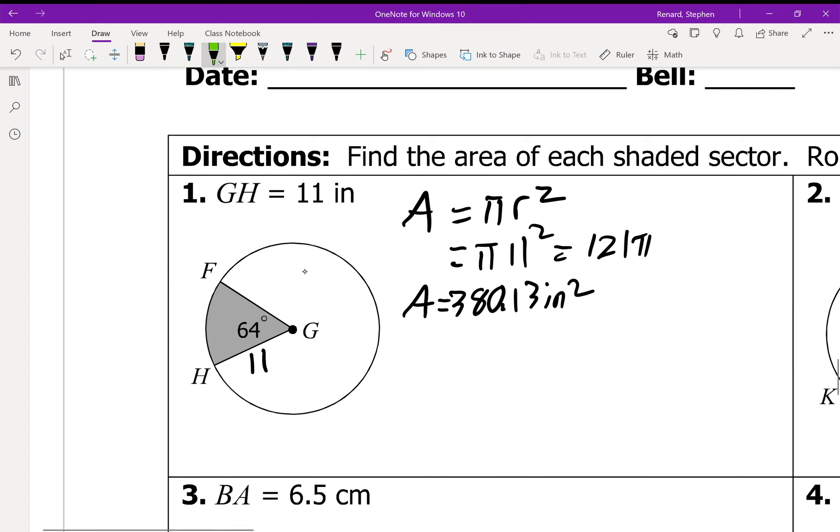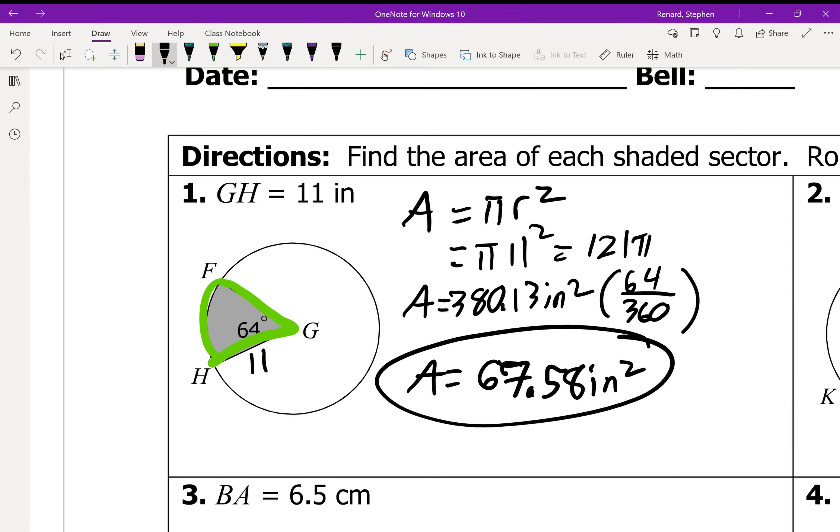And that would be this whole thing. Well, I don't want that whole thing. All I want is this little wedge. Well, that little wedge is 64 degrees. So that's 64 degrees out of 360 degrees. So we take 380.13, multiply that by 64, divide by 360, and that is going to give us 67.58 square inches. And that is the area of the shaded sector.